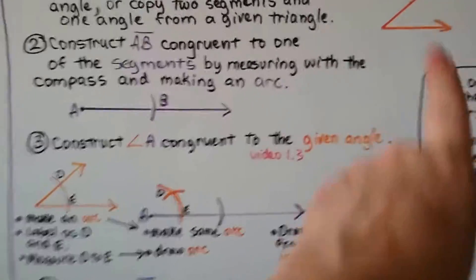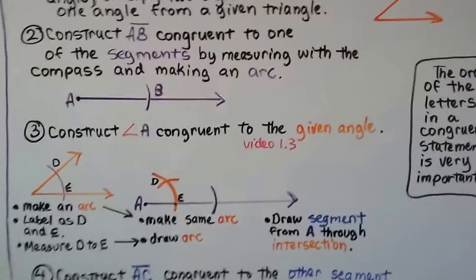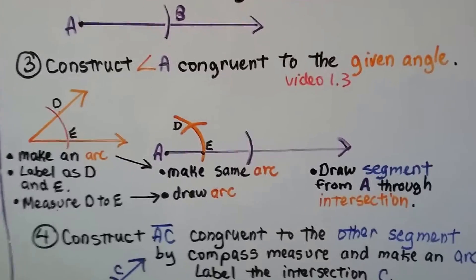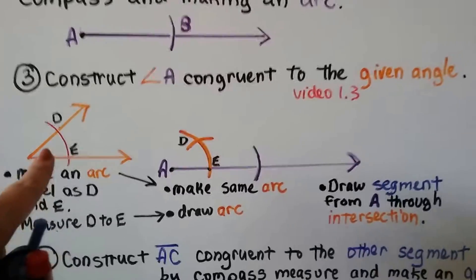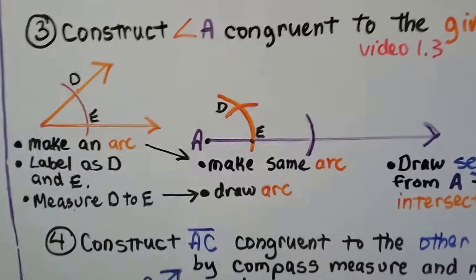Now I'm going to construct angle A congruent to that given angle. We learned how to do that in video 1.3 - you can go back into the geometry playlist and watch that if you missed it. But I'm going to cover it quickly right now. I moved it down to here. We're going to try to copy this angle.